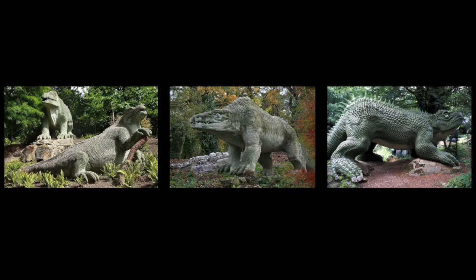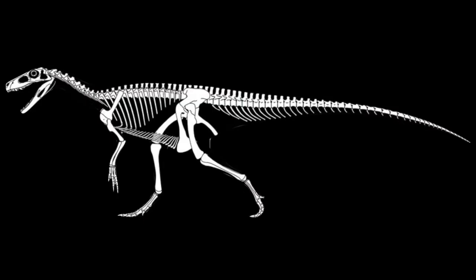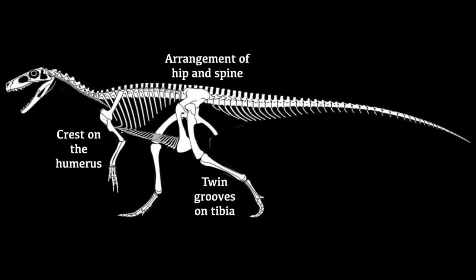While this definition is still part of the story, things changed. We now know that these three looked more like this, and so more features were needed. There are lots of little things, but as well as the fused hip, there are twin grooves on the tibia, a crest on the humerus, and most distinctively, walking upright while other reptiles have legs that stick out sideways.